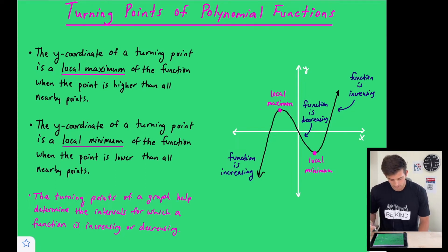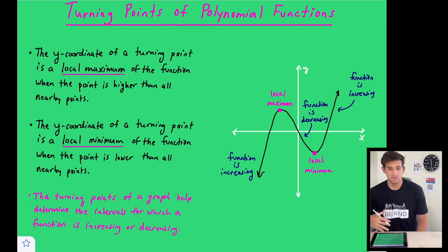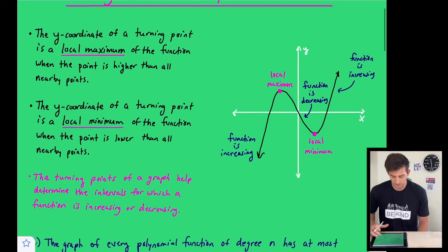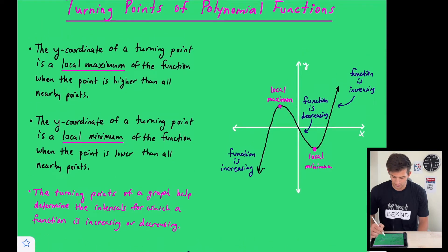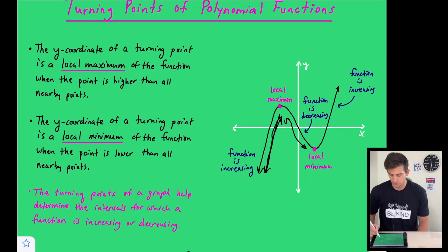So what do these turning points help us do? They help determine the intervals for which a graph is increasing or decreasing, which we'll do in the examples in this video. We can see the function is increasing on the left, then once we reach the local maximum it decreases between the local maximum and local minimum, and then it's back to increasing after the local minimum.